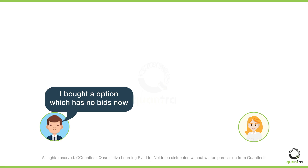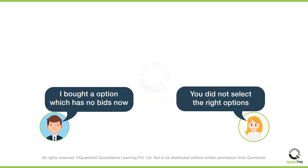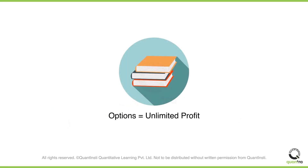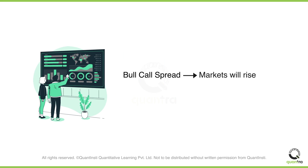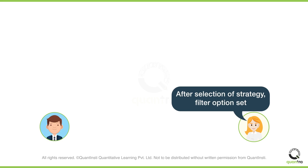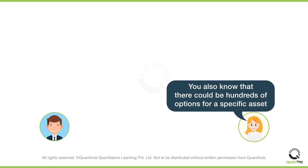Sophie tells John that there were multiple mistakes he made, including not selecting the right options. Theoretically, options can make unlimited profits, but in reality it is far from true. Based on your view of the market, you should choose the right option strategy — for example, a bull call spread if you think markets will rise, or a butterfly spread if you think the market will stay flat. Once you select the strategy, you need to filter the available options set, which will help you enter and exit a trade. Screening options helps you narrow down to a few which are perfect for your strategy.